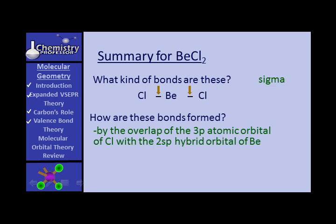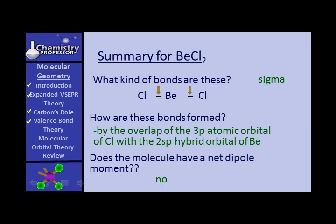Does the molecule have a net dipole moment? The electrons are pulled from beryllium toward chlorine in both directions, so there's no net direction of movement of charge. No, it doesn't have a net dipole moment.